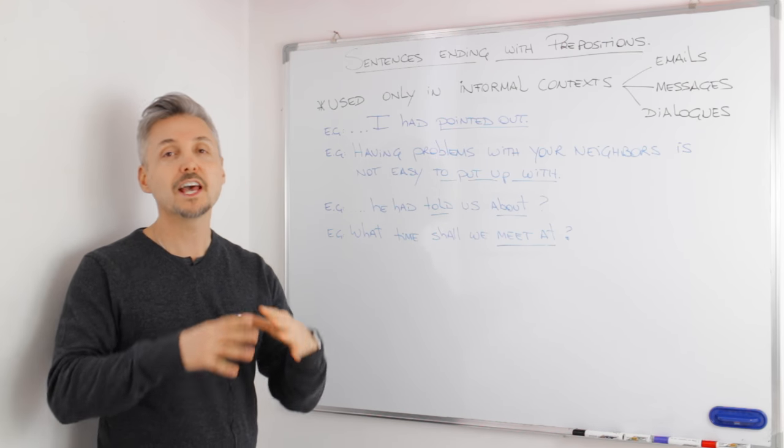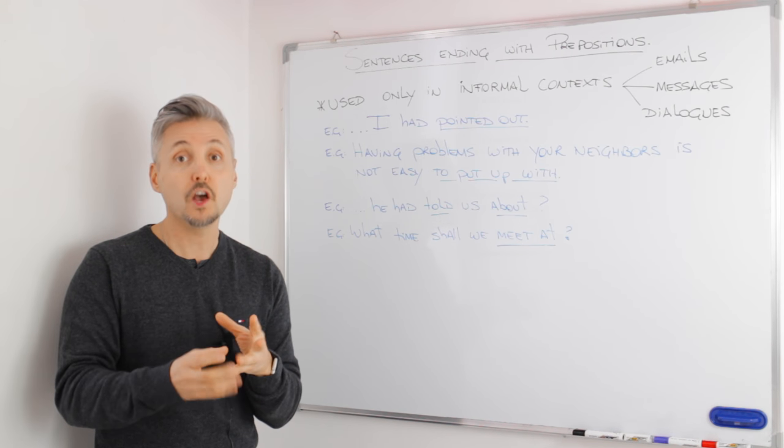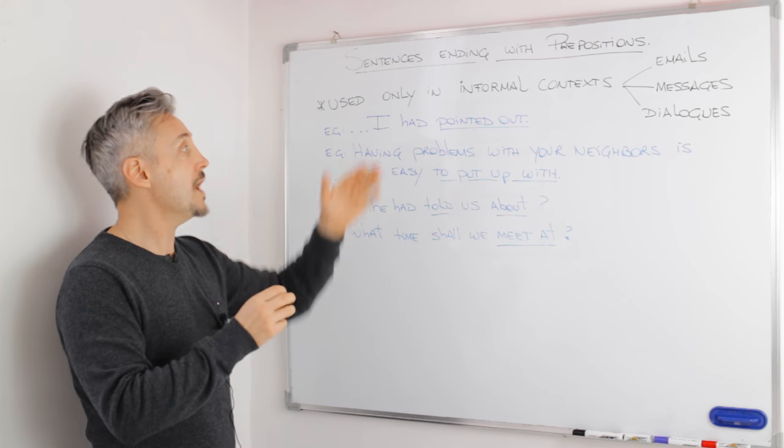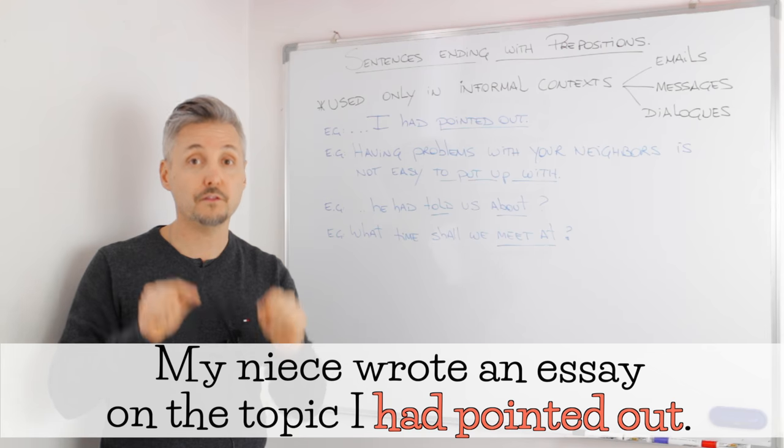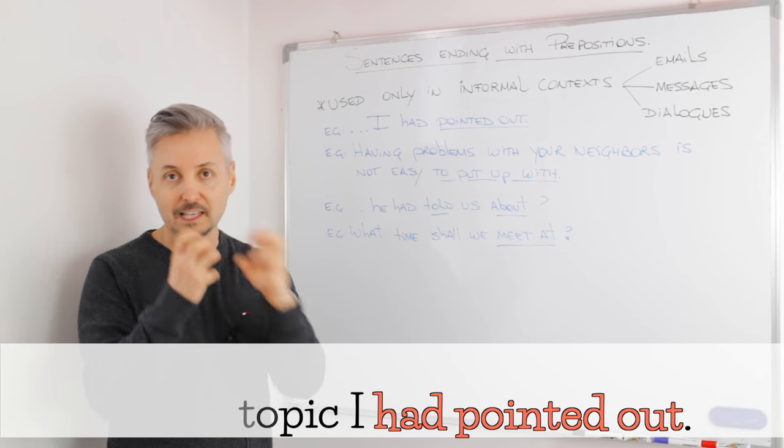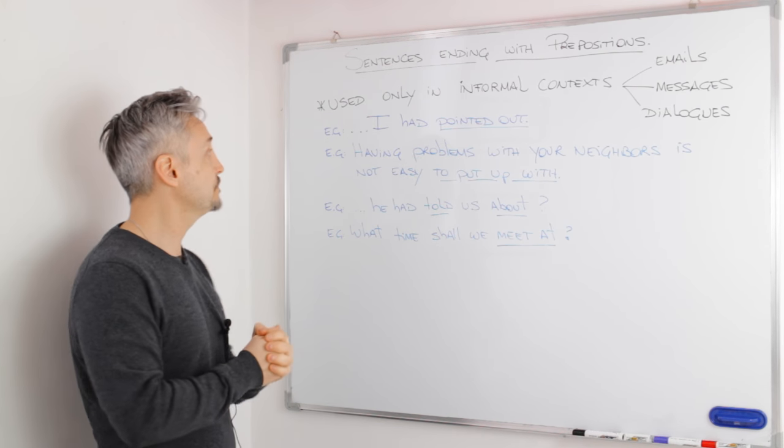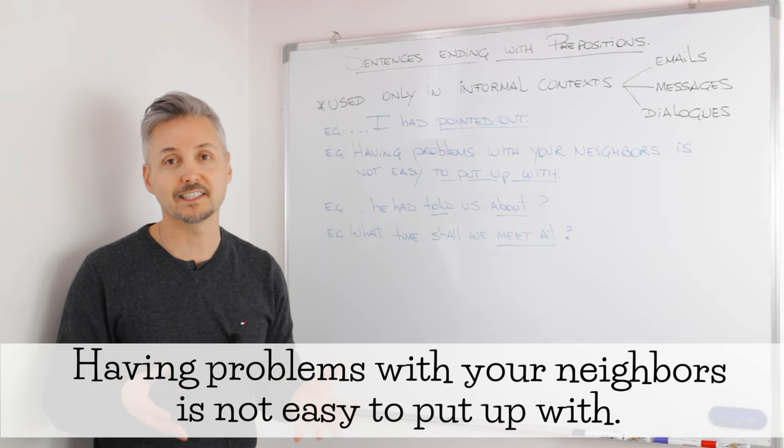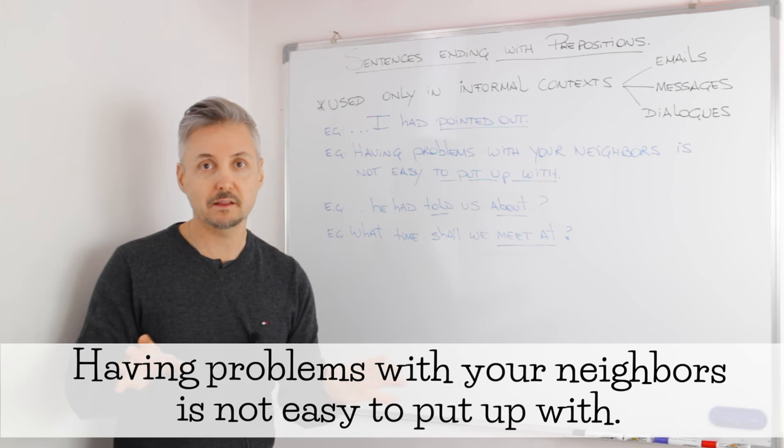There is a lot of controversy about prepositions ending a sentence. But let me tell you that we use prepositions at the end of a sentence when you speak informally or when you write a text message, for example, informally, obviously, or a dialogue when you have a dialogue with someone. So I listed some examples. I had pointed out, like in my introductory example, to point out is a phrasal verb. If you don't know what is a phrasal verb, there is a lesson and you can click here to watch it. A phrasal verb is a verb plus a particle. It could be a preposition or an adverb. Having problems with your neighbors is not easy to put up with. In this case, we have two prepositions at the end of a sentence. Always when we are speaking to somebody or when we are writing an informal email. Not formally, okay?